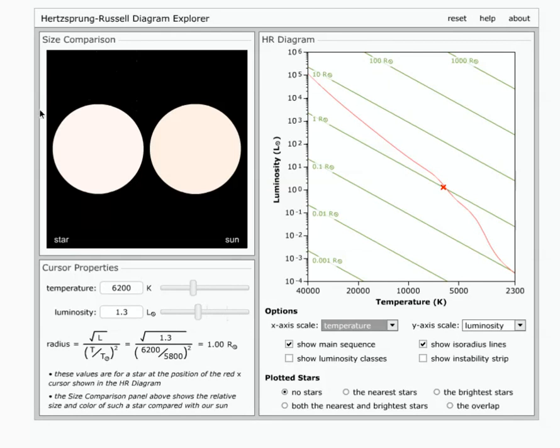And then the size comparison is showing us, so you can see by the equation here, which we haven't really learned about, but you could derive the radius of the star based on its temperature and its luminosity. So those two things are telling us the size.